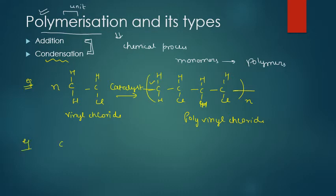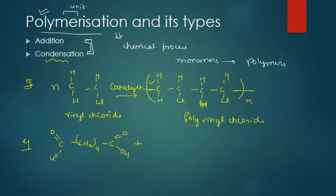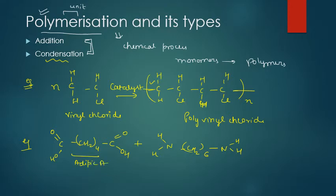This can sound complex but it is not — you just need to remember the example. We have two compounds: one is adipic acid (HOOC-(CH2)4-COOH) and the other monomer is hexamethylene diamine. It has two NH2 groups, making it a diamine.